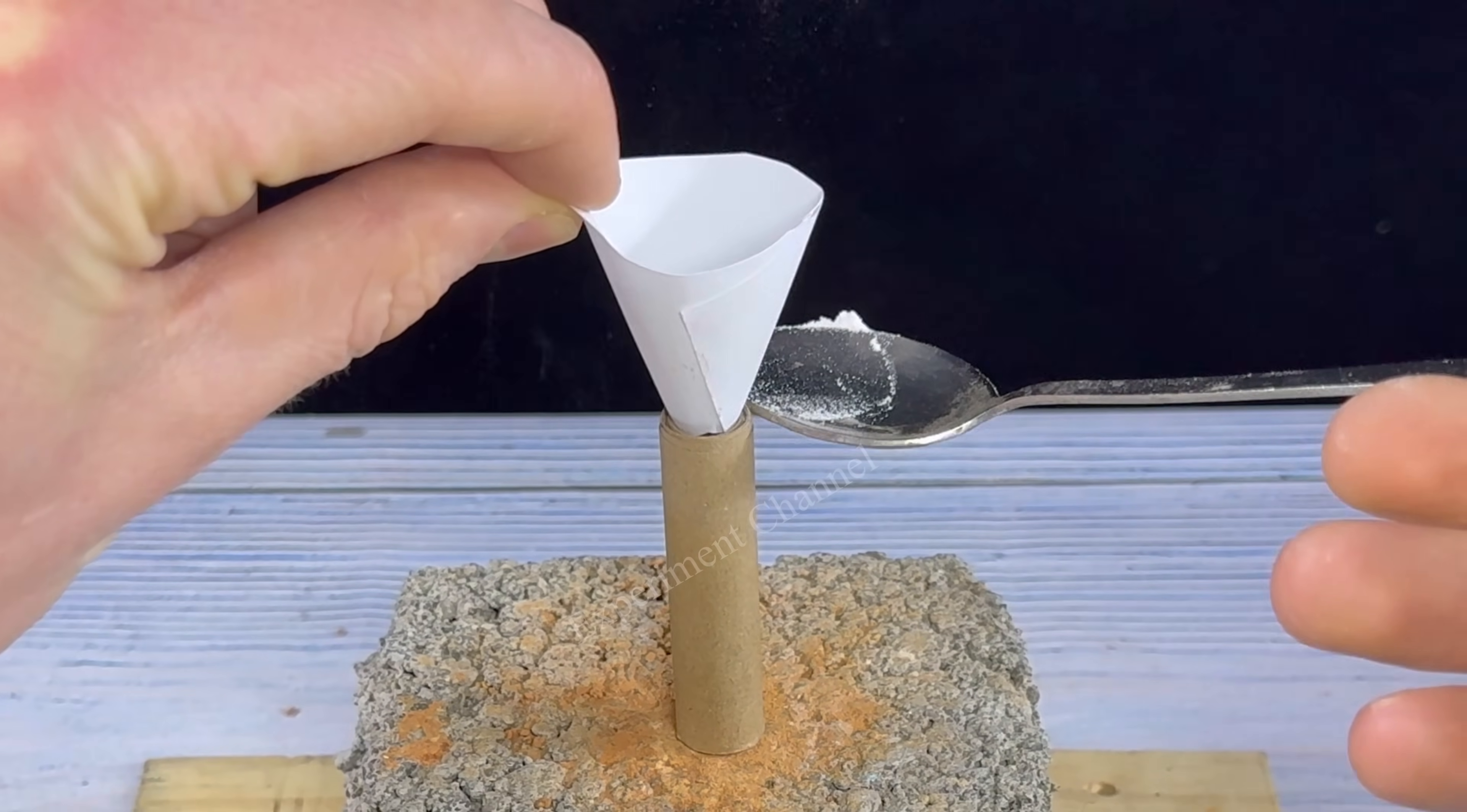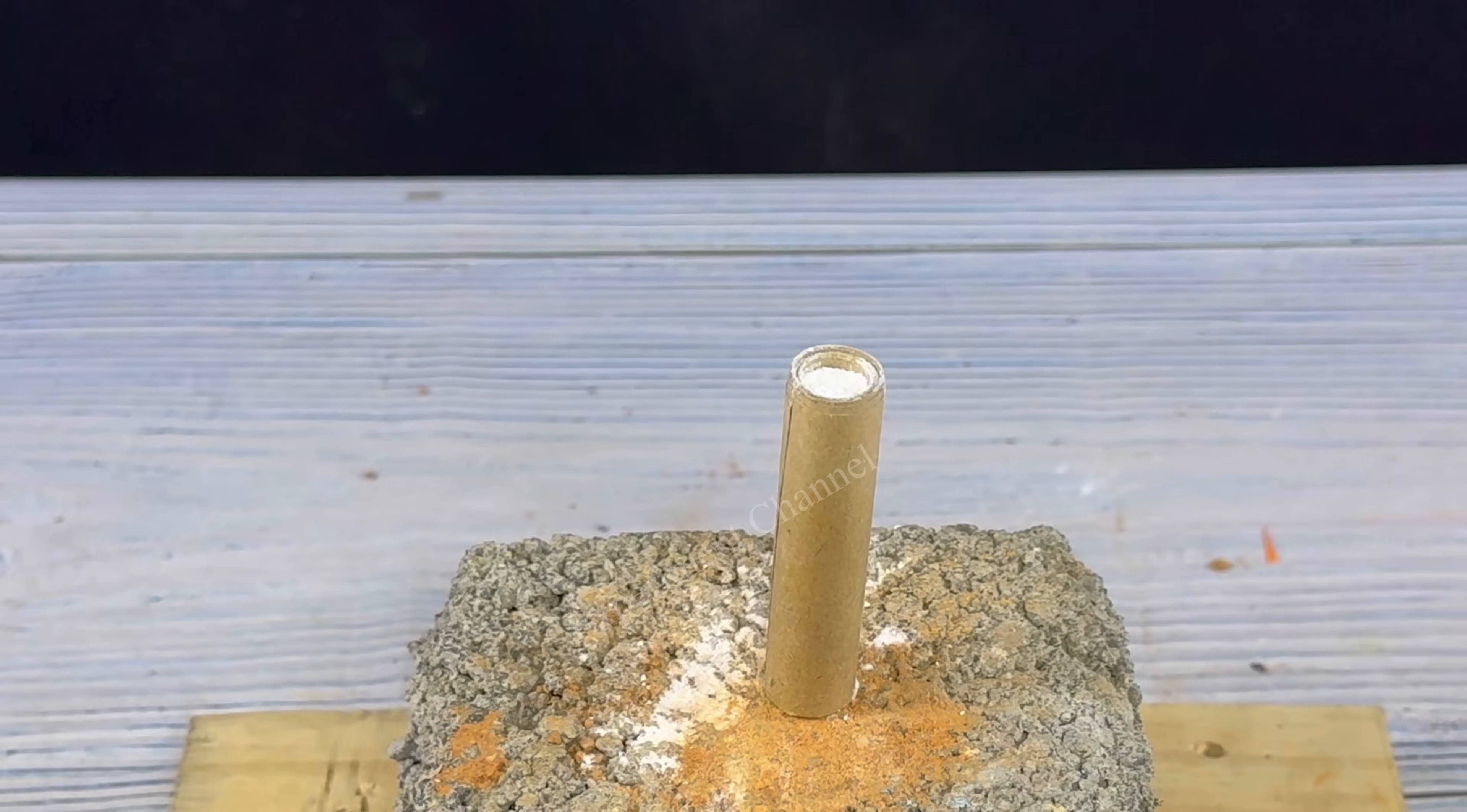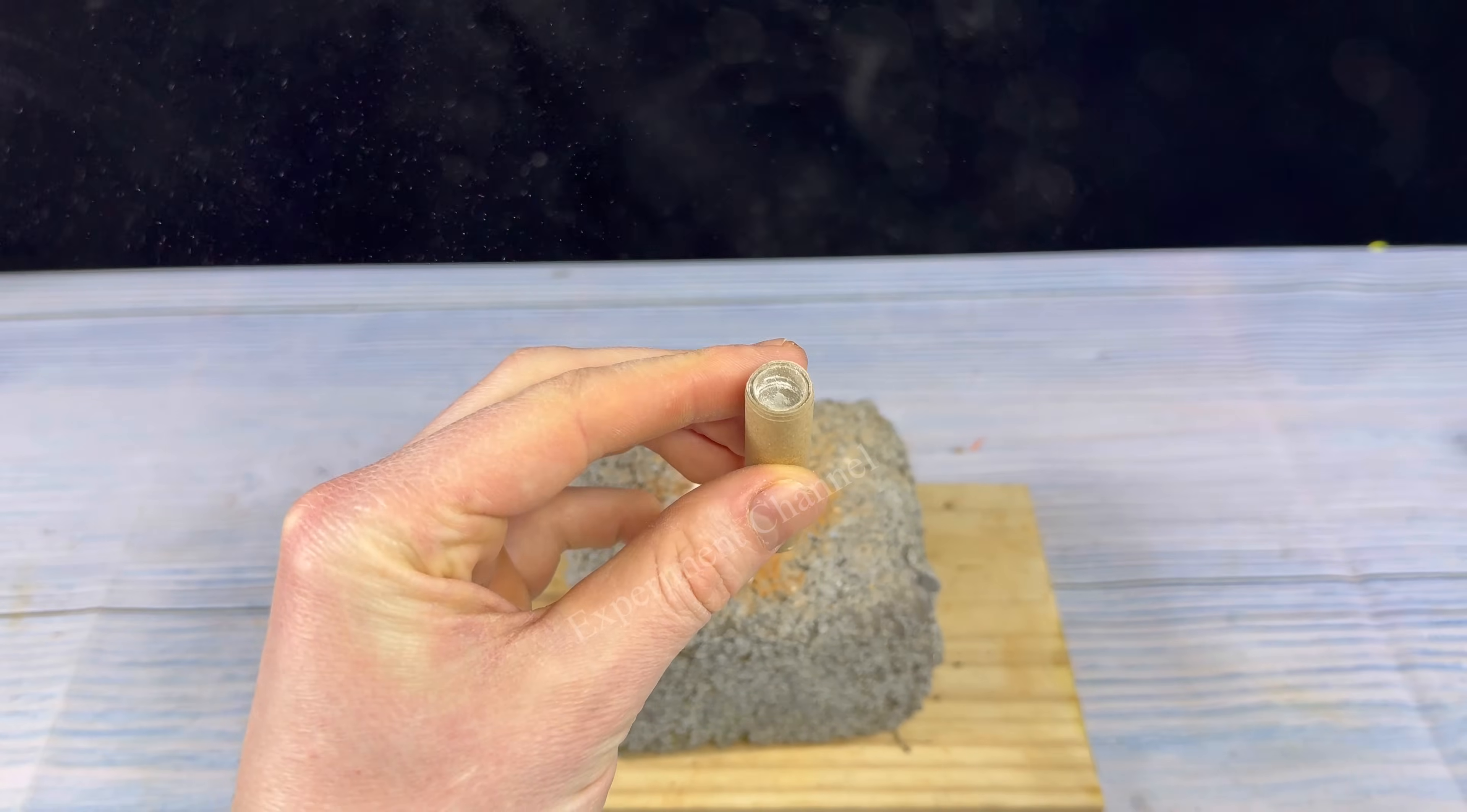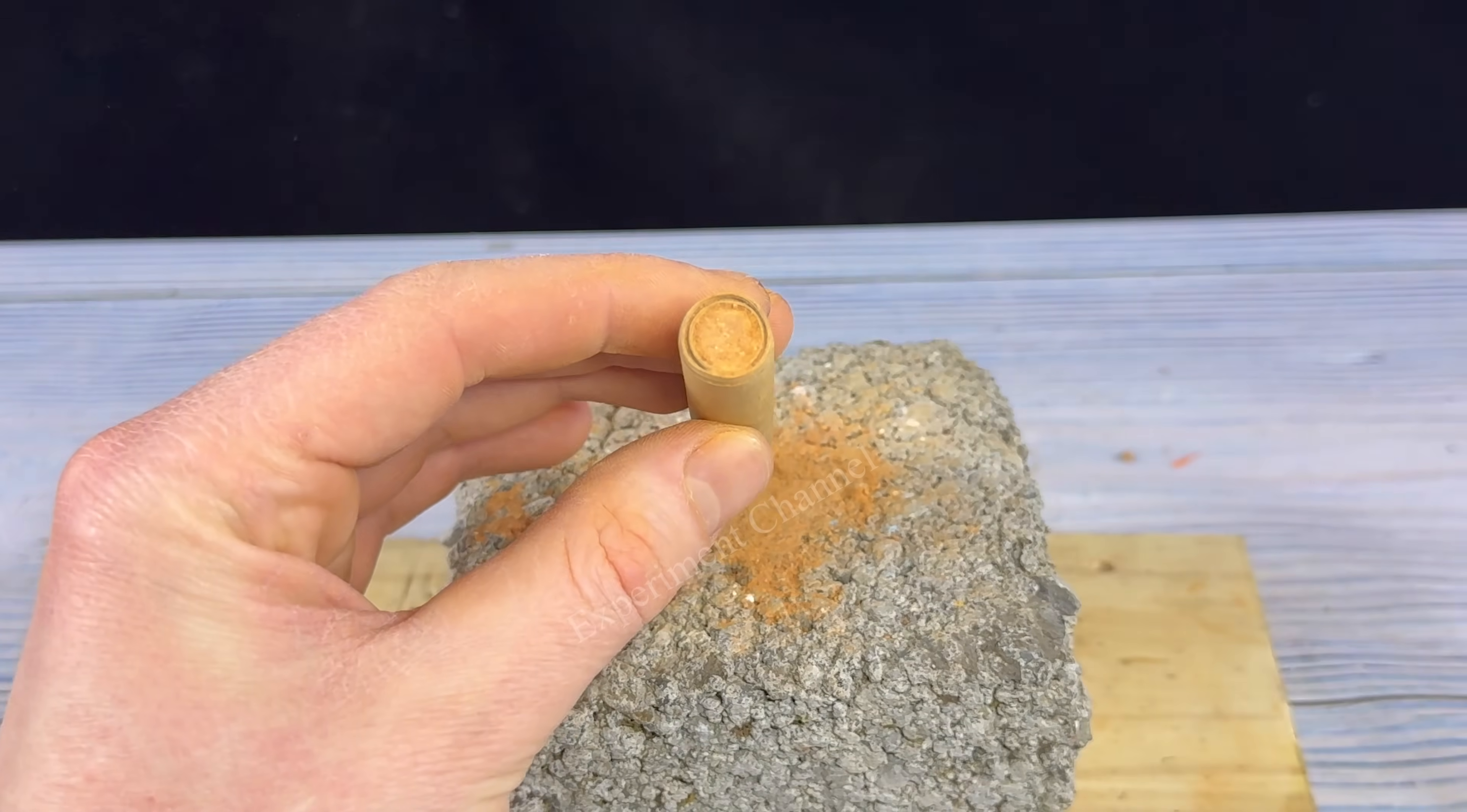Now we're going to take our white mix and load it into our casing we made earlier. We want to fill it right up to that line we made earlier. Now we'll cap it off. Nice.